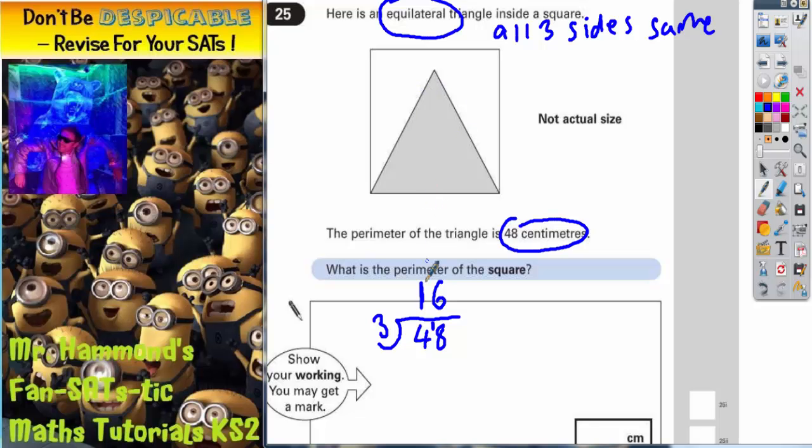So that's 16, that's 16, and that's 16. Now it does say what is the perimeter of the square, so 16 is each side of the triangle.